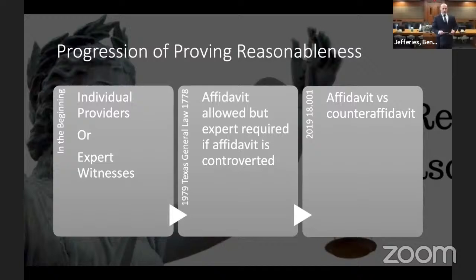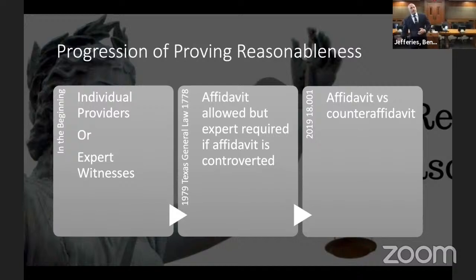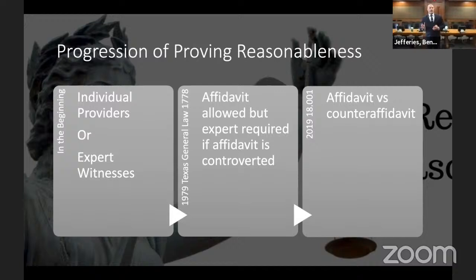So, a summary of the history is that originally we went from parading in individual providers and expert witnesses, to 1778 giving us an affidavit that was rendered useless once a counter-affidavit was introduced, to currently having more of an affidavit versus counter-affidavit system. There are still situations where an occasional expert witness may need to testify, but the rule has come a long way in streamlining that process and saving time and money.